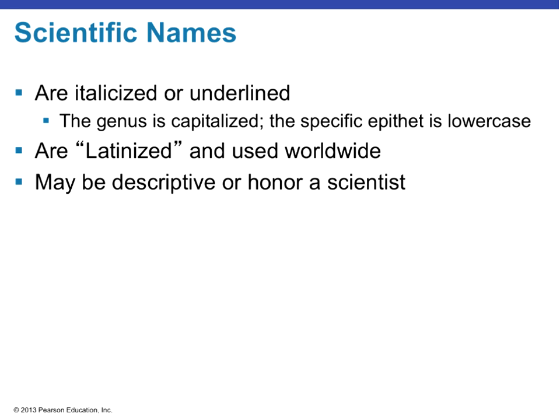Whenever we have scientific names of microorganisms, as you read them throughout your text or in lab, they are italicized or underlined. The genus name — for example, Escherichia — is capitalized the first time it appears, and the specific epithet 'coli' is written in lowercase. We have Latinized the scientific names so that they can be used worldwide — whether you're speaking Italian, French, English, or Portuguese, the scientific name will always remain the same.